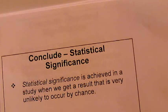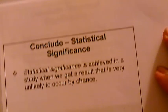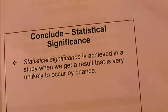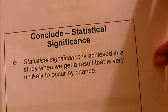Then, conclude — whether it is statistical significance or practical significance. Statistical significance is achieved in a study when we get results that are very unlikely to occur by chance. This is where we do hypothesis testing and confidence intervals. We can take that data, analyze it, and determine whether or not we have statistical significance.